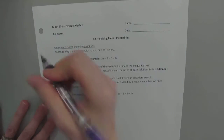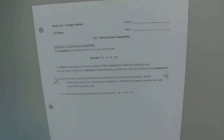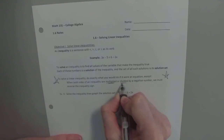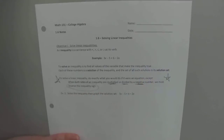So to solve, right here in the middle is kind of the main thing to pay attention to. To solve a linear inequality, do exactly what you would do with an equation, except: when both sides of an inequality are multiplied or divided by a negative number, we must reverse the sign of the inequality symbol. So if you're multiplying or dividing by a negative, reverse the sign. And sometimes you can do it completely by avoiding that, and I'll show you what I mean.